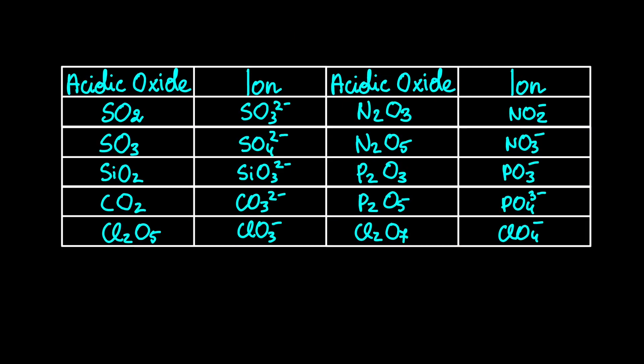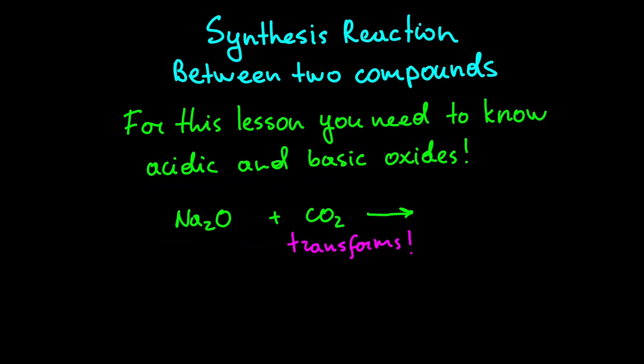I have a table down here with acidic oxides and it shows what ions they transform into during chemical reactions. If we find CO2, we will see that in the chemical reaction, it should change into CO3 2- ion. Let's get back to our actual reaction. So now we know that when this reaction occurs, CO3 2- ion forms.